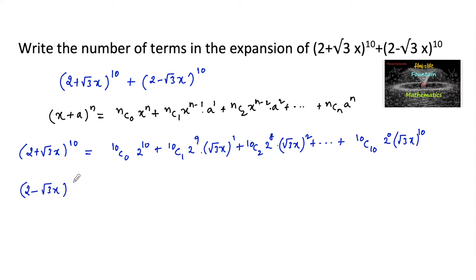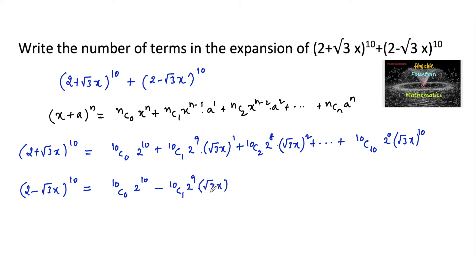Similarly, we can write (2 - √3x)^10 as: 10C0·2^10 - 10C1·2^9·(√3x)^1 + 10C2·... and so on. For odd powers we will get negative terms, so those will cancel when we add.